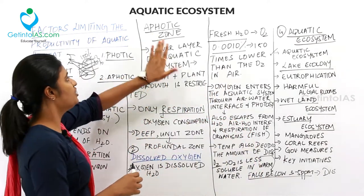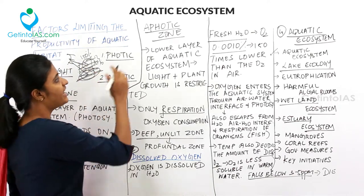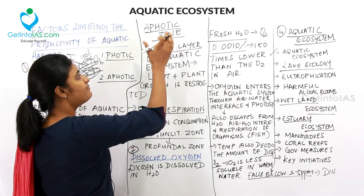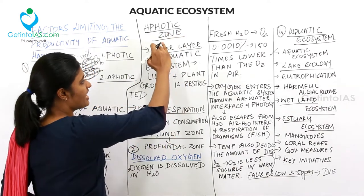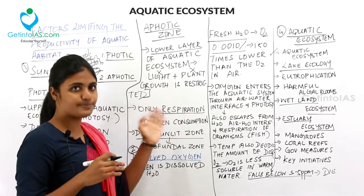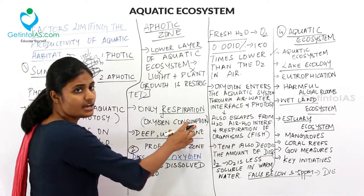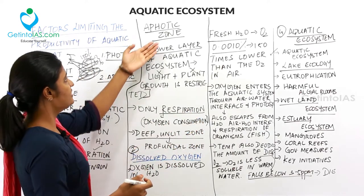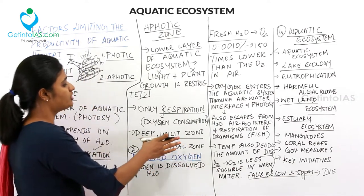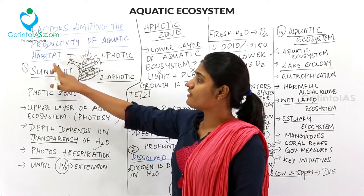The aphotic zone is the lower layer of the aquatic ecosystem, where light penetration is very low or absent. In this zone, light and plant growth are both restricted, so only respiration takes place. Oxygen consumption is significant here. The aphotic zone is deep and unlit, and is also called the profundal zone.